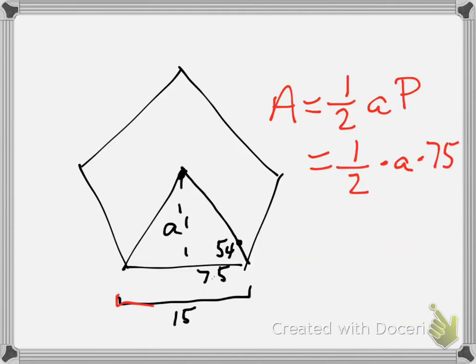Here's 15. Your apothem cuts it in half, so that 15 becomes 7.5. And now we have our triangle.